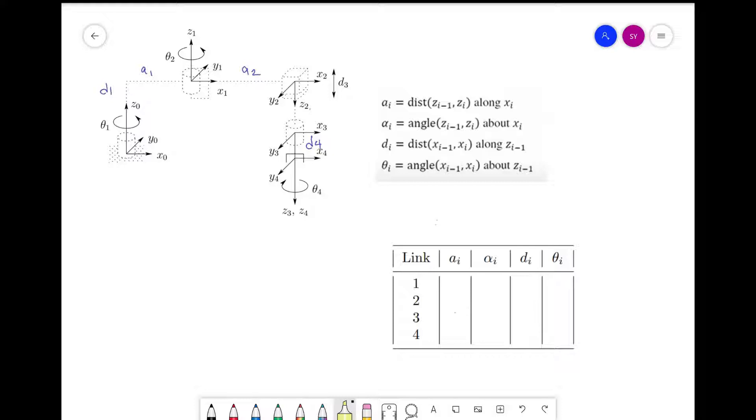There are four parameters we need to find for the DH table. The first parameter is a_i, the distance from z_{i-1} to z_i measured along x_i. This is also known as the link length.